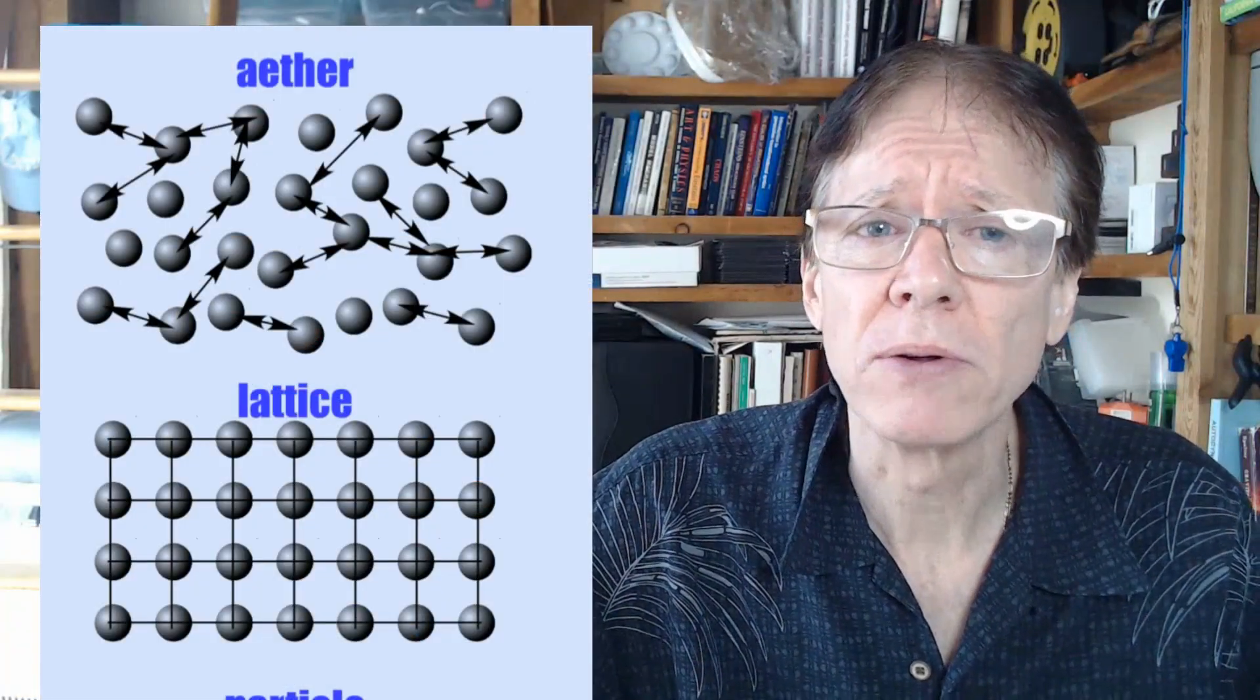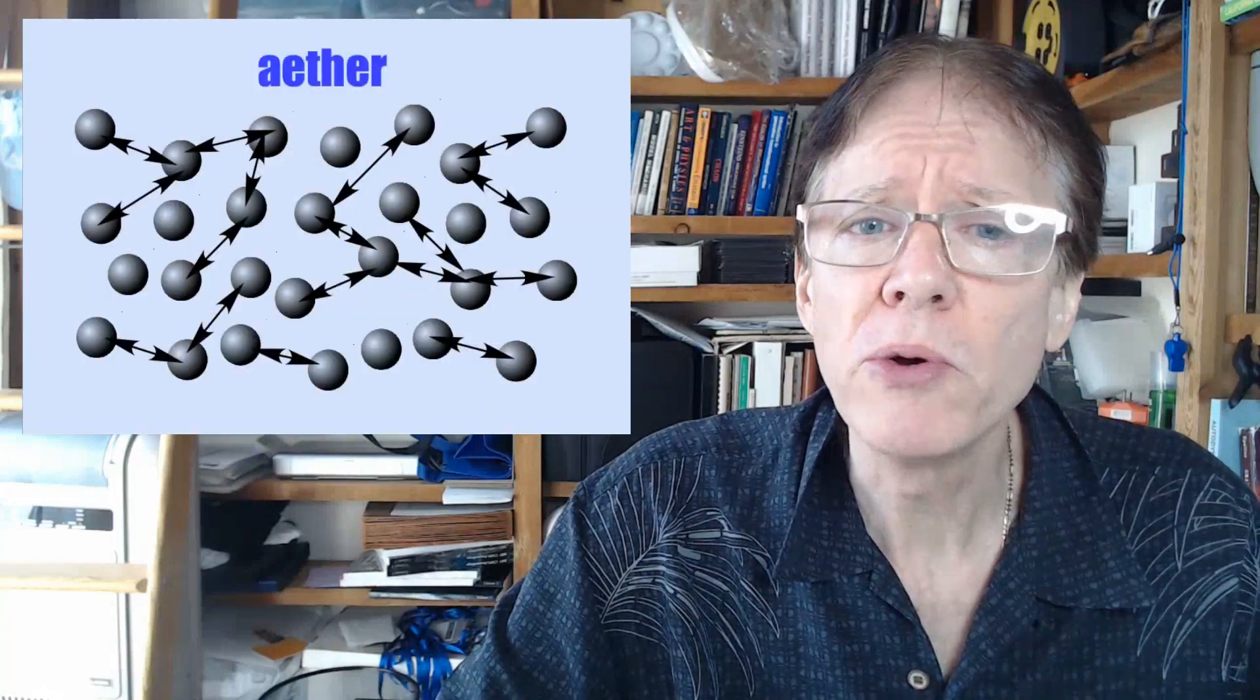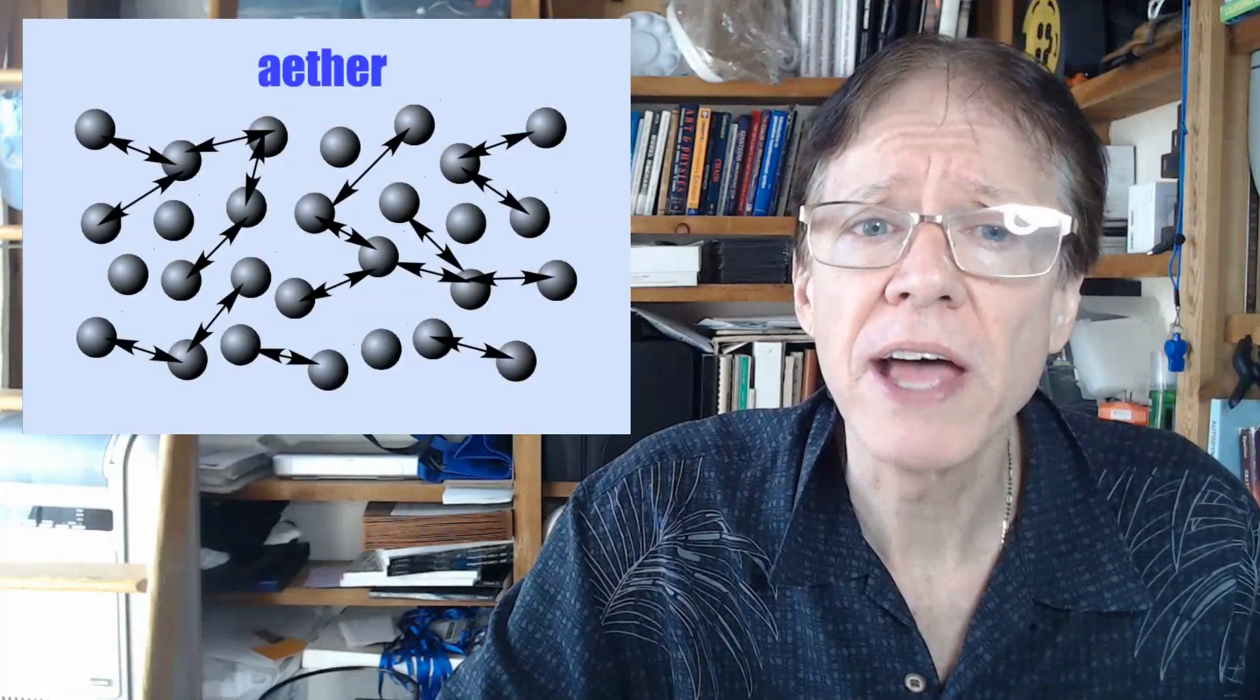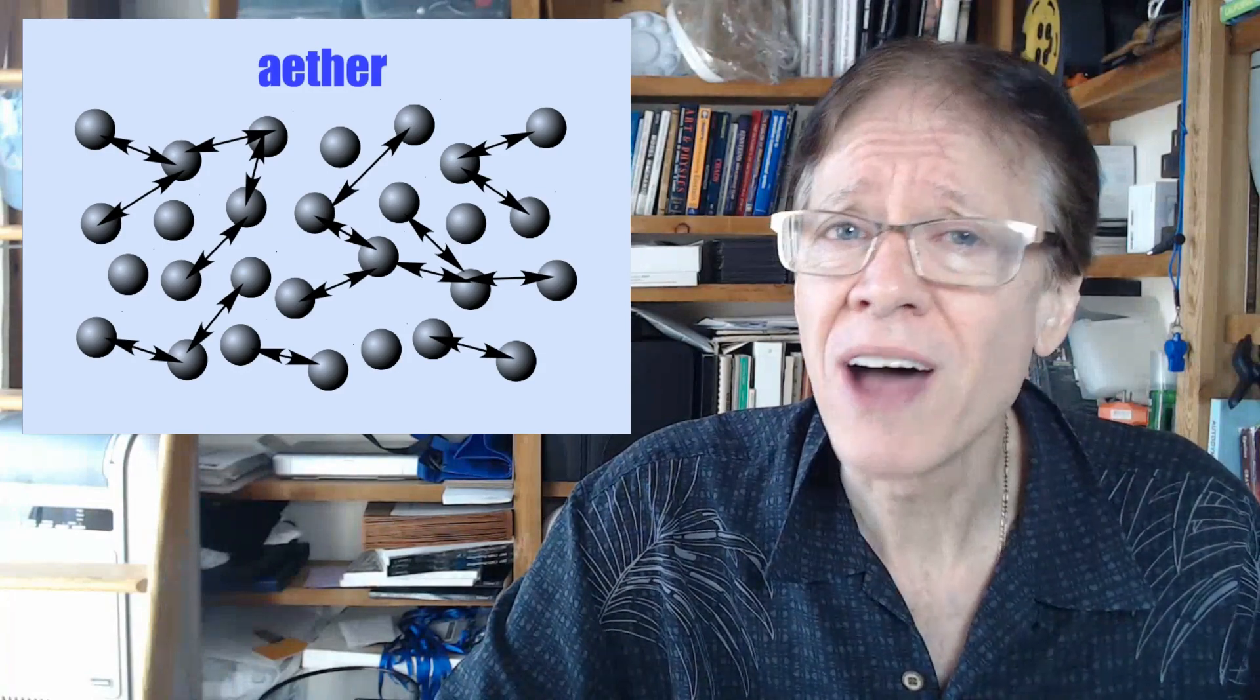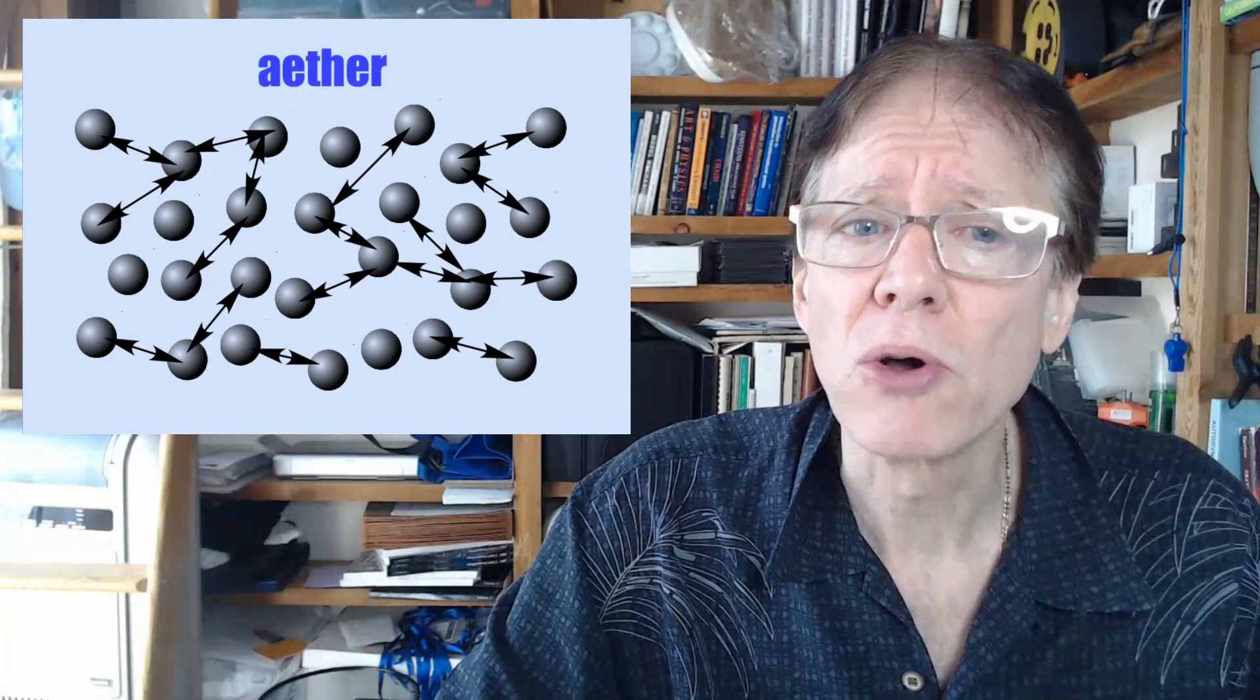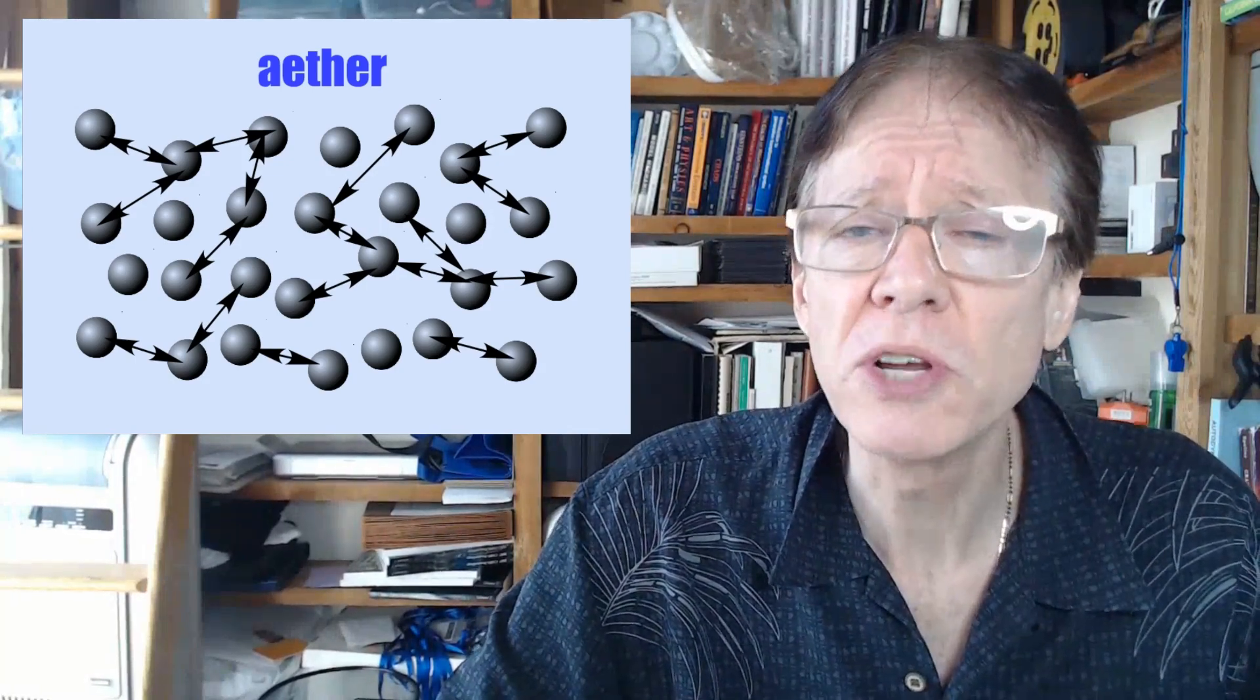Ether and lattice models give light a physical model, and both do so without the need of a photon. Ether models avoid the problem of the existence of a photon by creating a model that describes light as waves through a medium called ether. The ether particle is not a photon. It is a particle that is similar to the photon in that it is firstly postulated to explain light.